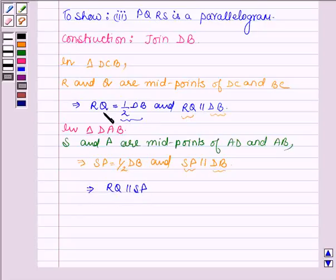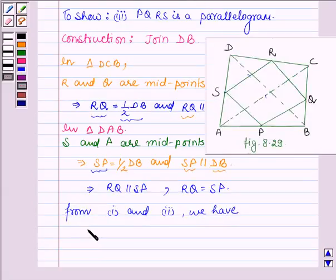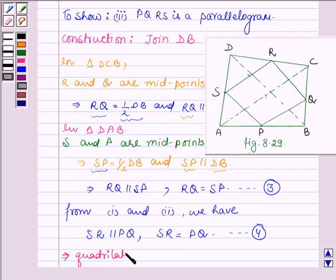Also, since half of DB is equal to RQ and half of DB is equal to SP, this implies that RQ is equal to SP. Similarly, from parts 1 and 2 we have SR is parallel to PQ and SR is equal to PQ — let these be equation number 3 and equation number 4. Now since in quadrilateral PQRS the opposite sides are parallel and equal, this implies that quadrilateral PQRS is a parallelogram.